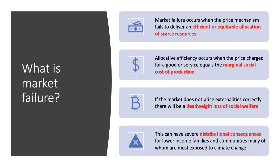A reminder, first of all, of what market failure is. One of the best definitions is that market failure is when the price mechanism fails to deliver an efficient or equitable allocation of scarce resources. This can often happen, for example, when the price of something — a good or a service — does not equal the marginal social cost of production. If we take, for example, externalities, if the market does not price externalities correctly, then there'll be a deadweight loss of social welfare.